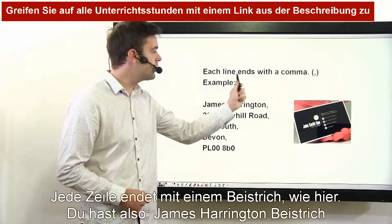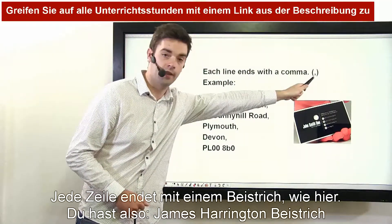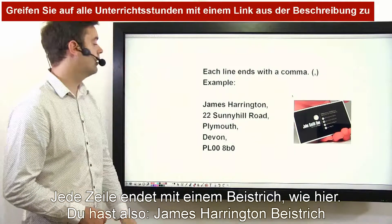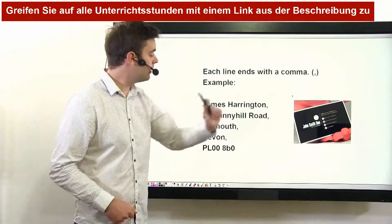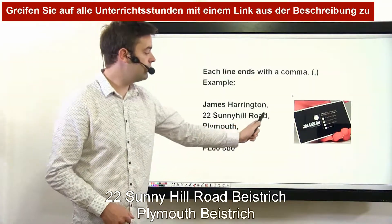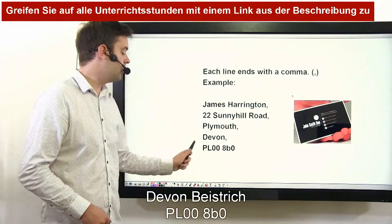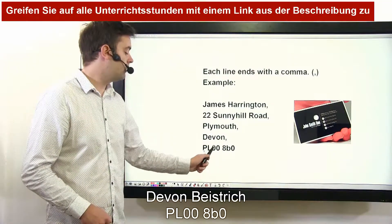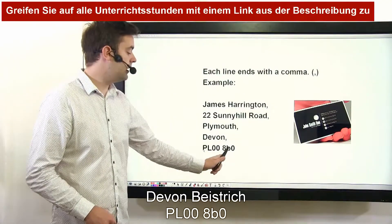Each line ends with a comma. For example: James Harrington, 22 Sunny Hill Road, Plymouth, Devon, PL008B0.